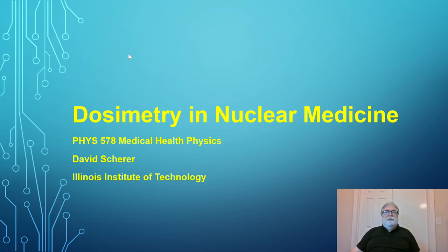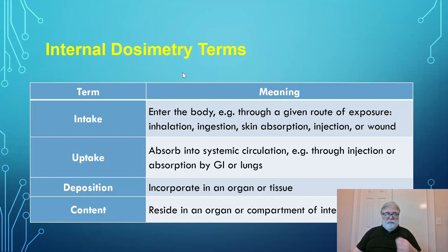First, I want to discuss some terms that are important in internal dosimetry. We need to distinguish the intake — the amount of material taken into the body, either by inhalation or ingestion, and in some cases by skin absorption. In clinical nuclear medicine, it's usually by injection, so the intake is directly to the bloodstream in most cases.